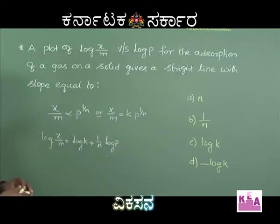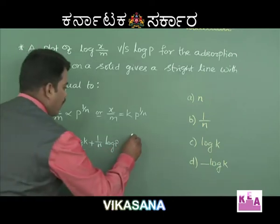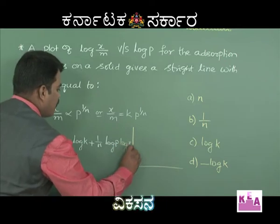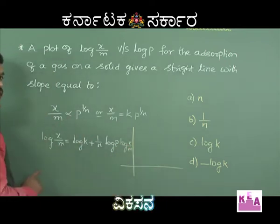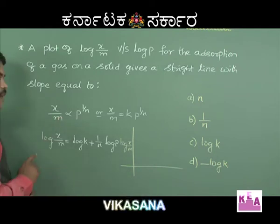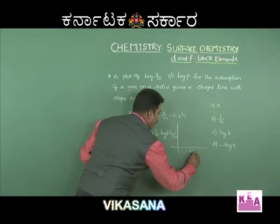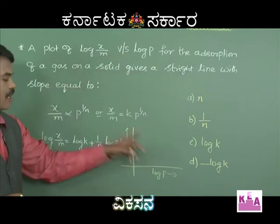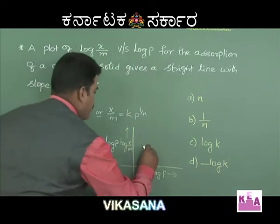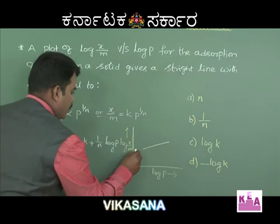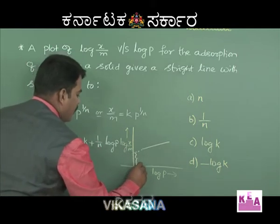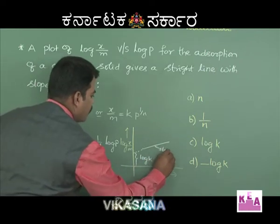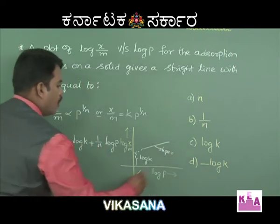This is similar to the straight line equation. A plot of log(x/m) — where x is the mass of gas on the adsorbent of mass m — versus log p will give a straight line. The intercept of this line gives you log k, and the slope is equal to 1/n.